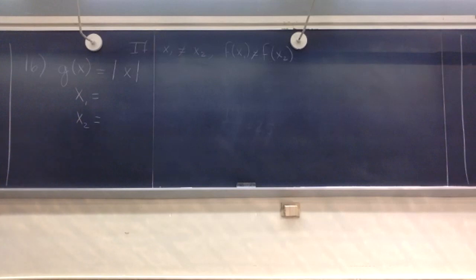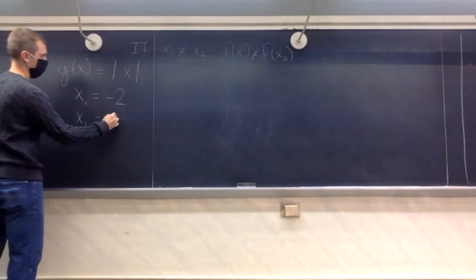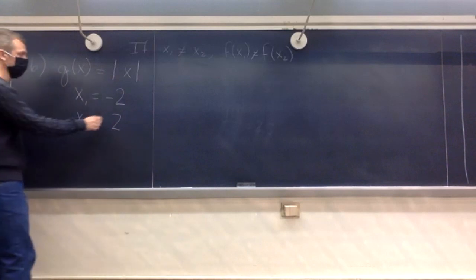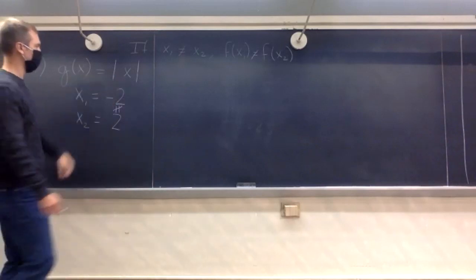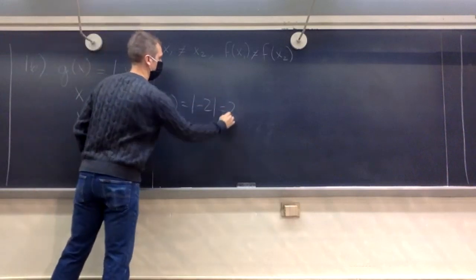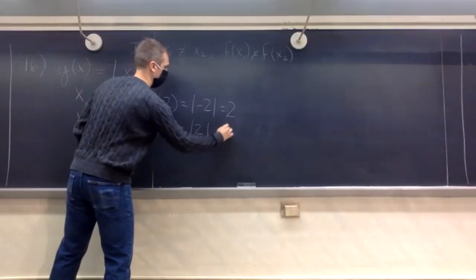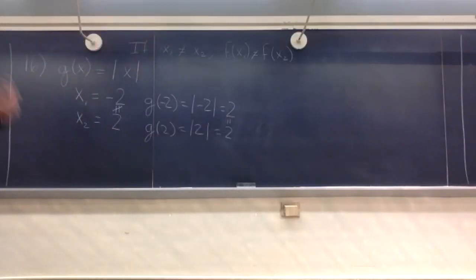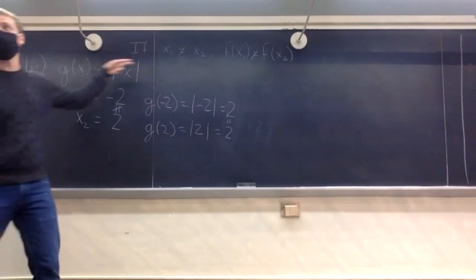If we plug in negative 2, we get the absolute value of negative 2, which is 2. And when you plug in positive 2, you also get 2. So we picked different inputs and got the same output, which means this is not one-to-one. This is actually two-to-one — we picked two different inputs and got one single output.